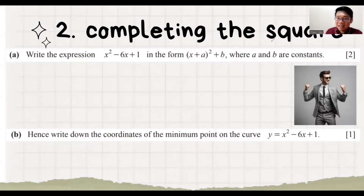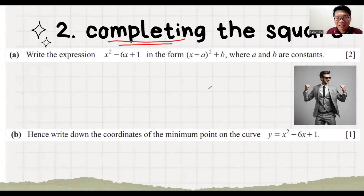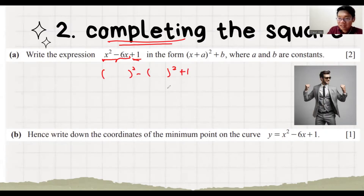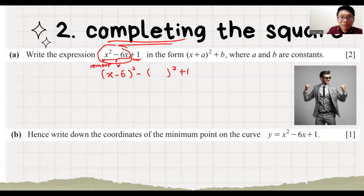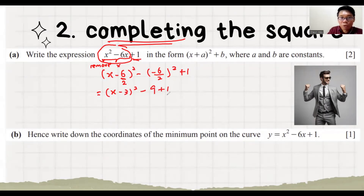The second technique in quadratic function is completing the square, which we already learned in maths. My method has three steps. Step 1: write big bracket squared minus small bracket squared, then copy the last part. Step 2: copy the expression but remove one x — so x-squared becomes x, and minus 6x becomes minus 6. Step 3: divide the second term by 2 and copy it into the small bracket. We get x minus 3 squared minus 9 plus 1, which equals x minus 3 squared minus 8.